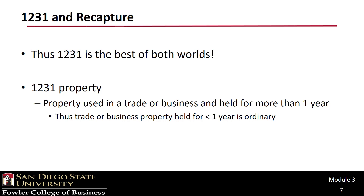The key then is: what is 1231 property? It's property used in a trade or business and held for more than one year. That captures all of the not-capital property we just discussed. As long as it is held for a year, we can get capital treatment for gains and ordinary treatment for losses. This is great news, but I'm going to warn you — it won't last.